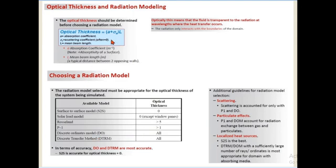For Rosseland and P1 models, you can define the number of bands. For the discrete transfer model, some constants are available. In surface-to-surface, you can configure view factor calculations. For the discrete ordinates model, you can modify certain coefficients and constants. A new Monte Carlo method is also available in Fluent. That covers the radiation model.